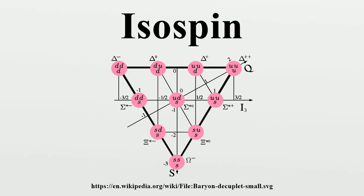Isospin was introduced by Werner Heisenberg in 1932 to explain symmetries of the then newly discovered neutron. The mass of the neutron and the proton are almost identical — they are nearly degenerate — and both are thus often called nucleons. Although the proton has a positive electric charge and the neutron is neutral, they are almost identical in all other aspects. The strength of the strong interaction between any pair of nucleons is the same, independent of whether they are interacting as protons or as neutrons.